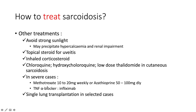Steroid-sparing agents include methotrexate 10–20 mg weekly or azathioprine 50–100 mg daily. In severe cases, TNF blockers such as infliximab, certolizumab pegol, adalimumab, golimumab, or etanercept may be used — infliximab is the go-to agent in most instances.